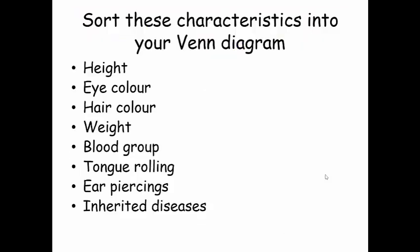Right now I'd like you to sort these different characteristics into your Venn diagram. So put them in the appropriate slot as to whether they're inherited, environmental or in the middle if they are both.